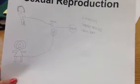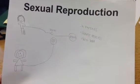Sexual and asexual reproduction. In sexual reproduction, there's a father and mother. The mother lets go of an egg, and the father lets go of a sperm, and they form a zygote. It has two parents.